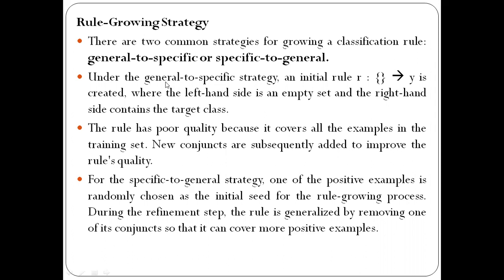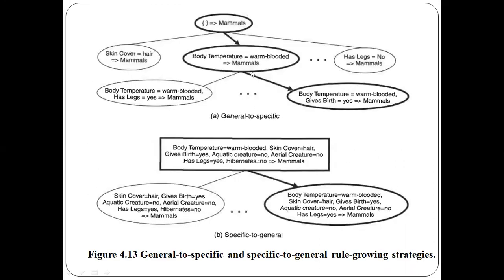The general-to-specific strategy will not initially have good quality rules because it starts with a general default rule that covers all examples. We need to add conjuncts on the LHS side at each step to improve the rule quality. Here is an example where we have applied the general-to-specific strategy to increase or improve the rule quality.